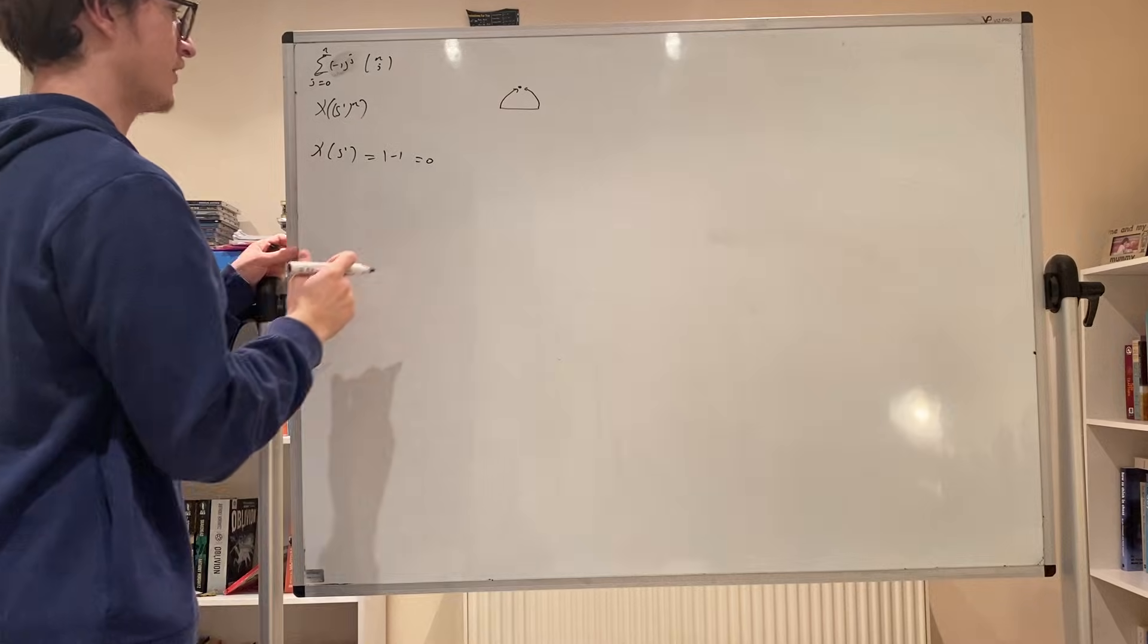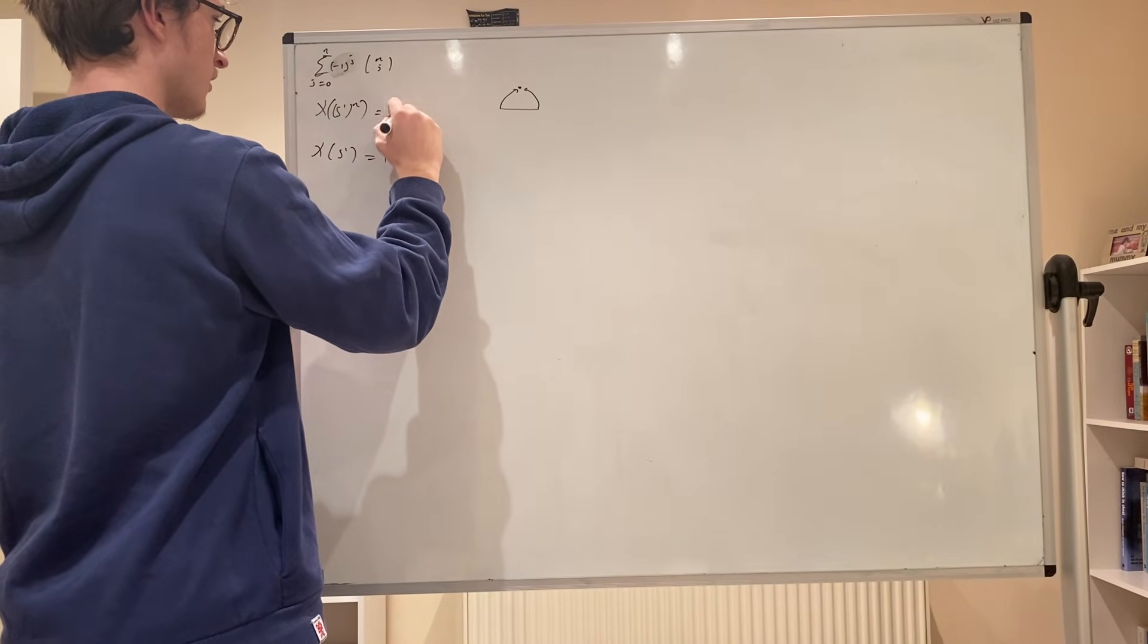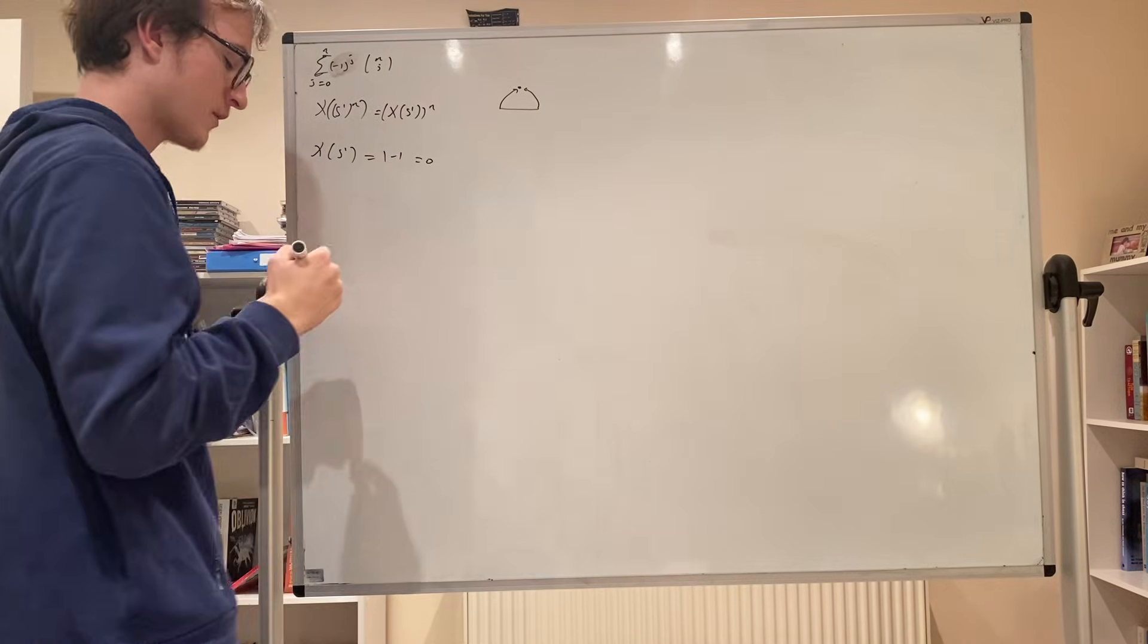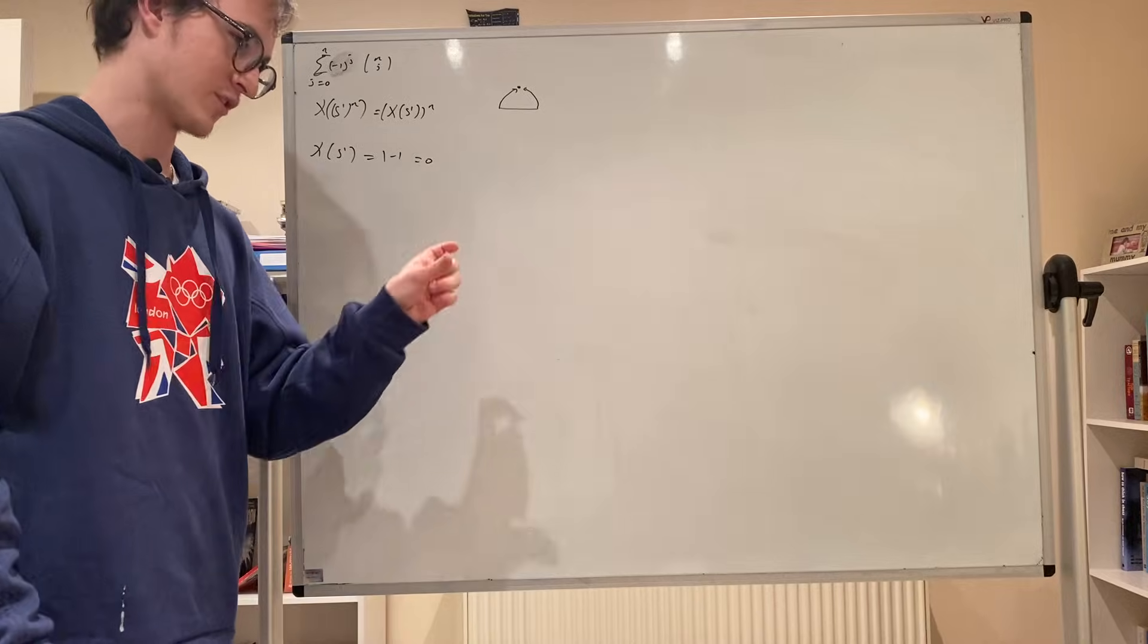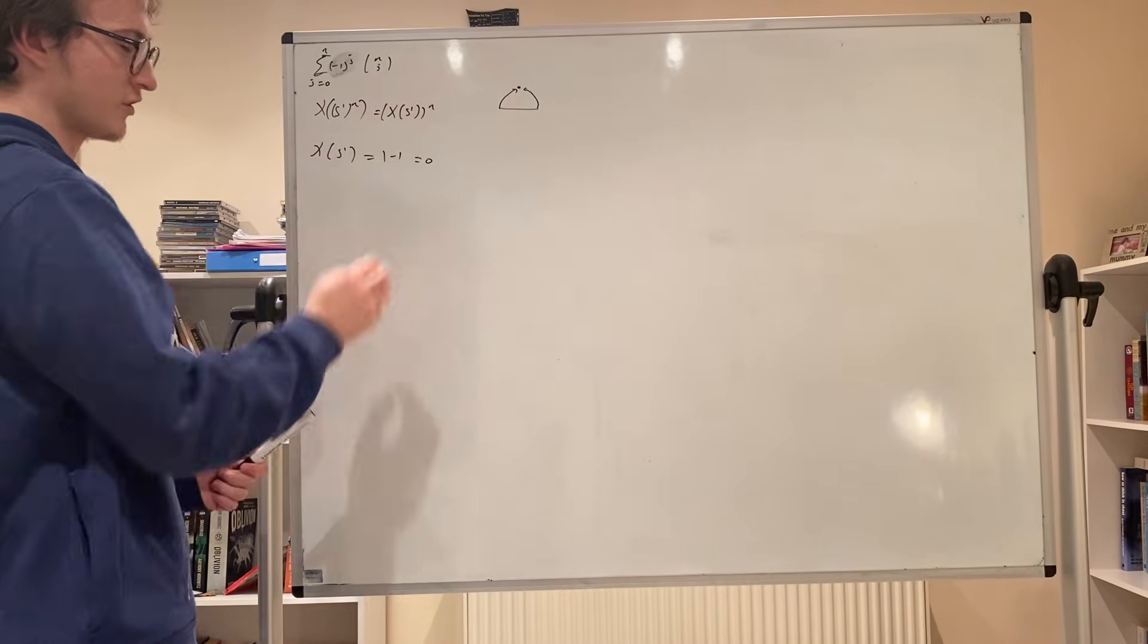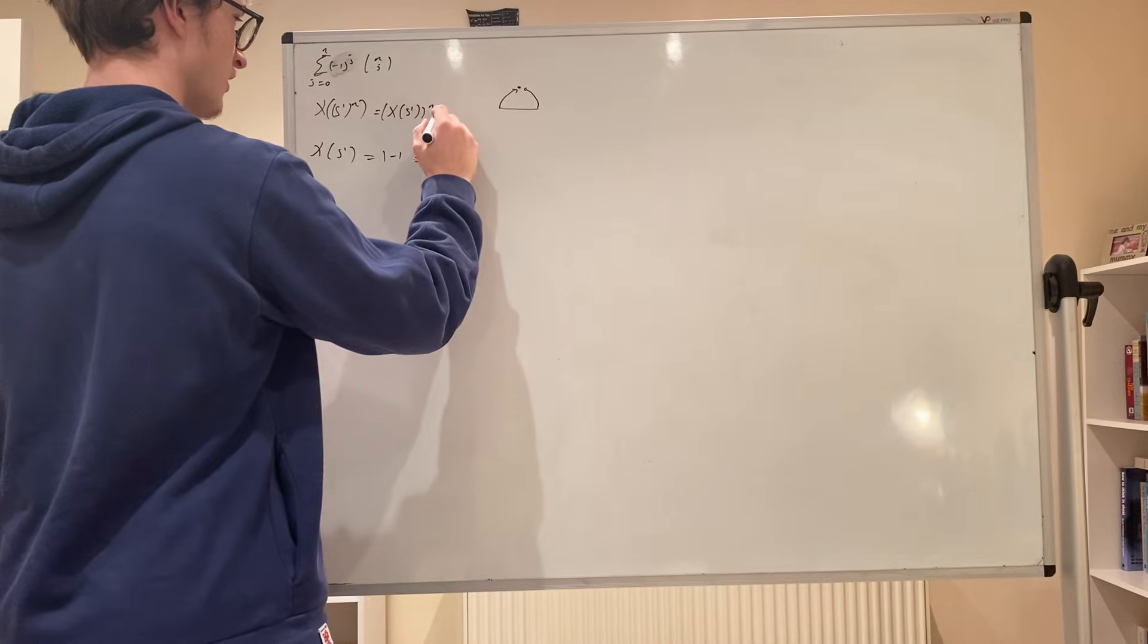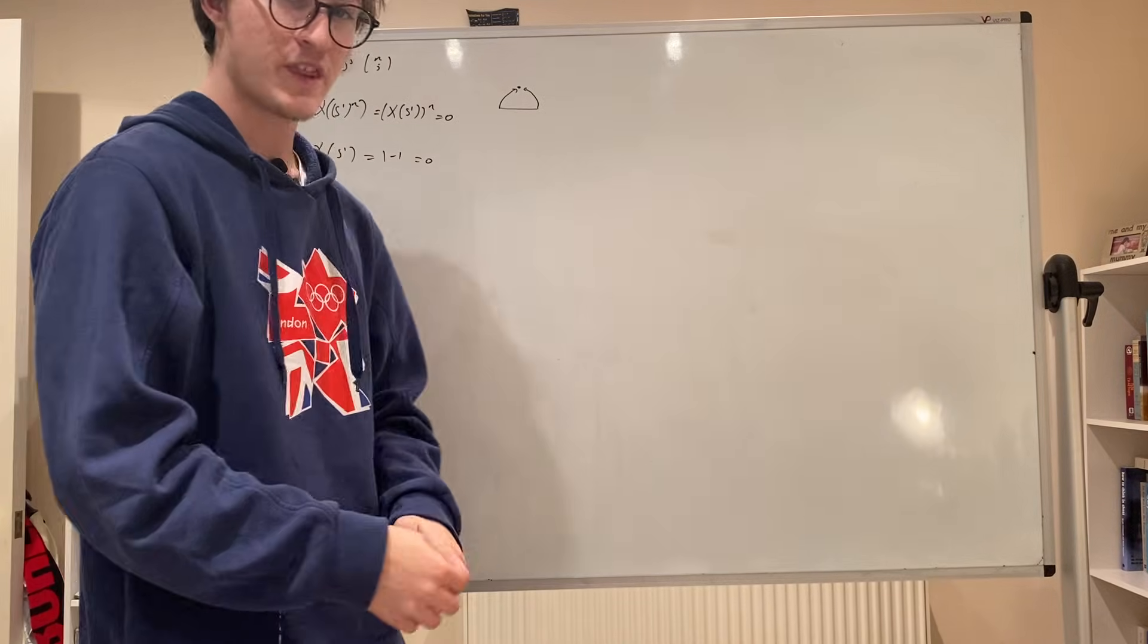So the Euler characteristic of the n-torus, by the product theorem - the Euler characteristic of a product of spaces are just the product of their Euler characteristics - is just 0 times 0 times 0, n times. So the Euler characteristic of the n-torus is 0.